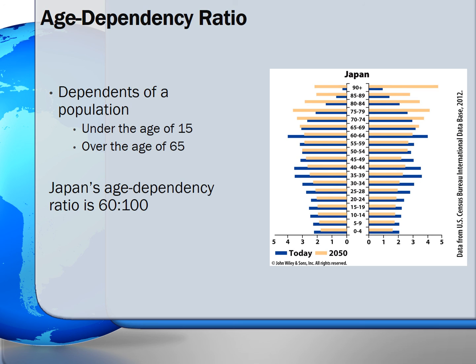As a result of this shift in population, geographers look at the age dependency ratio of any country. The age dependency ratio is the number of people under the age of 15 and over the age of 65 as a proportion of the working age population. The closer the number is to 100, the more the age dependency population is the same as the working age population. This information is vital to a country to help them predict and plan for how their society will change.